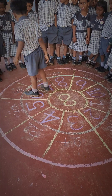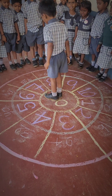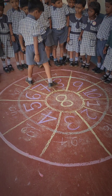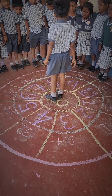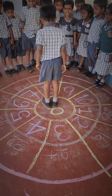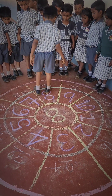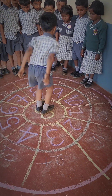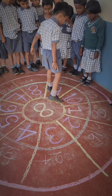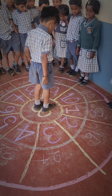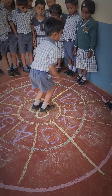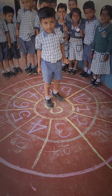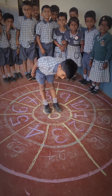8 sixes are 48. 8 sevens are 56. 8 eights are 64. 8 nines are 72. 8 tens are 80. Very good.